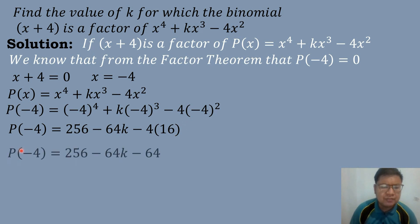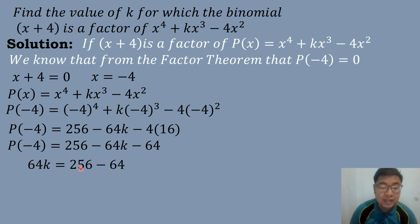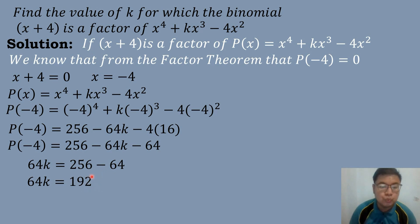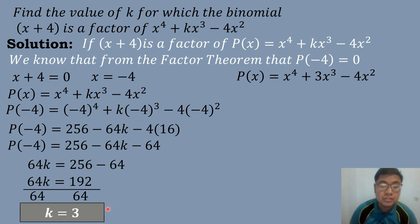So P of negative 4 equals 256 minus 64K, and negative 4 times 16 equals negative 64. Since P of negative 4 equals 0, we set 0 equals 256 minus 64K minus 64. Transposing negative 64K: 64K equals 256 minus 64, which equals 192. Dividing both sides by 64: K equals 3. After finding K equals 3, we substitute back into our dividend, so KX cubed becomes 3X cubed.